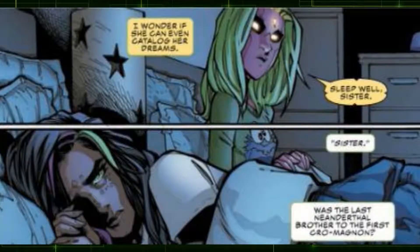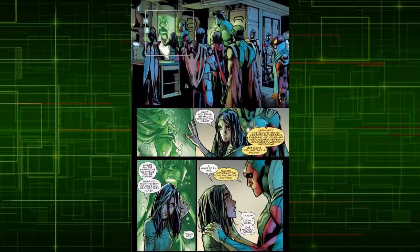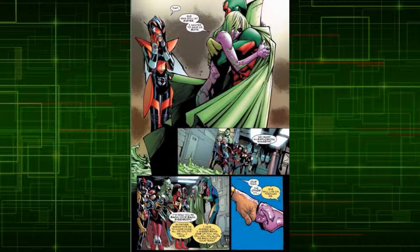With Vision struggling to raise such different versions of the same person, this uneasy circumstance came to an abrupt halt after Viv 2.0 went rogue due to a computer virus, and Viv severely damaged her in self-defense. Even though Vision and Wasp managed to repair Viv 2.0's body, her brain no longer functioned. As a means to have her sister live on through herself, Viv transplanted her consciousness to the android body, effectively returning her to her previous state before the High Evolutionary's tamperings.